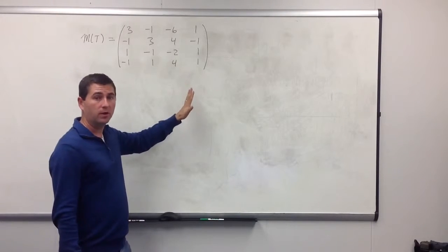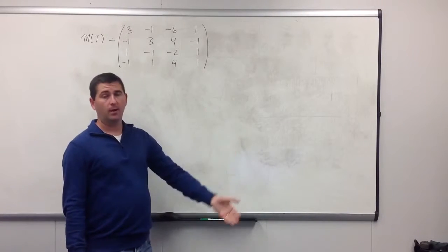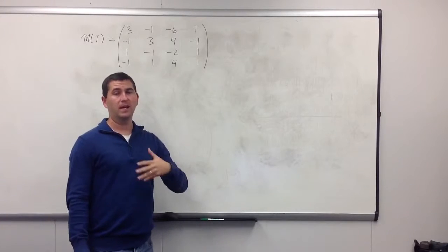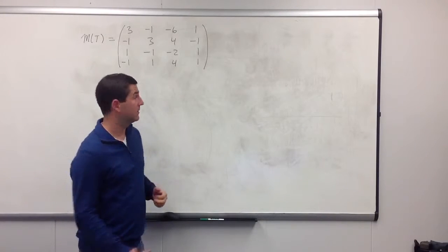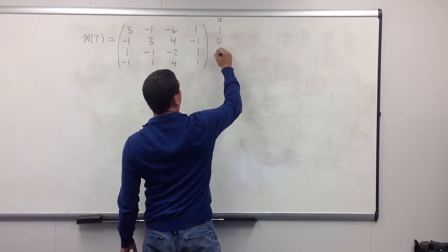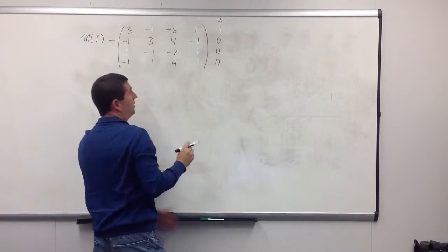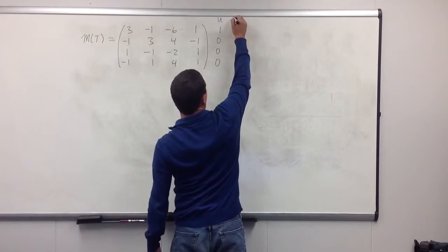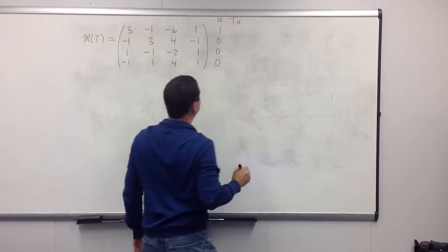As before, we're going to start with choosing a non-zero vector. Apply the operator to it until we get a linearly dependent list. I'll start with u. Again, I just start with the easiest one I can think of. This is, of course, not linearly dependent by itself, so I apply the operator T to it. I get Tu.